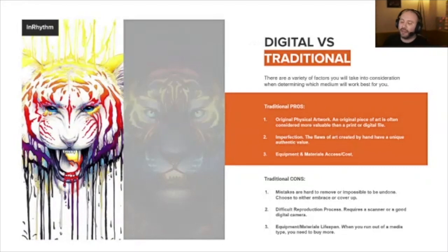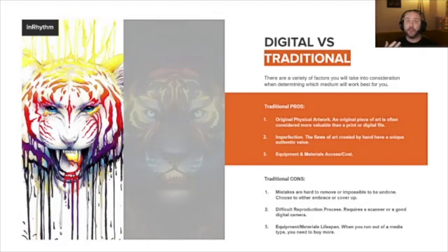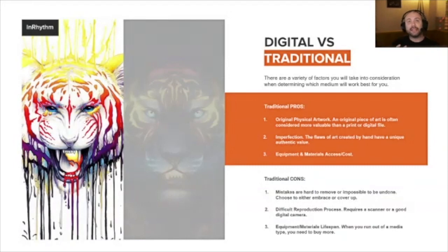I want to talk about the differences between traditional and digital — there are pros and cons for each. With traditional art, it's kind of unique: you can get a print of the Mona Lisa but you'll never have the Mona Lisa. All these individual traditional works — pen and paper, sculpture, whatever — there's only one of them, and even if reproduced, there's always that question of what was the original, and that's very important to a lot of people.